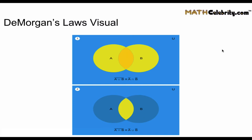Let's take a look at a visual using Venn diagrams for the two DeMorgan's Laws. For the first one, the two yellow circles together represent A union B. Everything outside in the blue area is the complement of A union B. What this is saying is: if we take everything not in A and intersect it with everything not in B, we get this blue area.